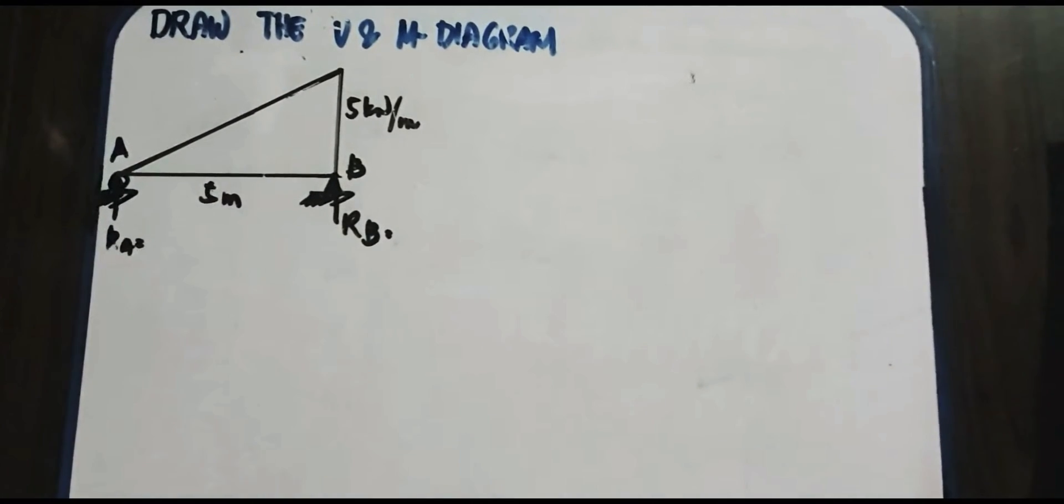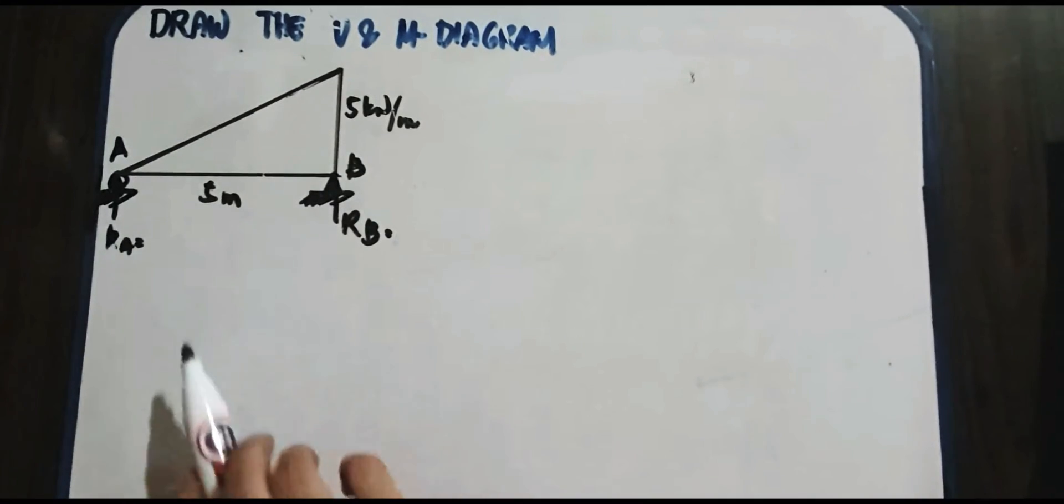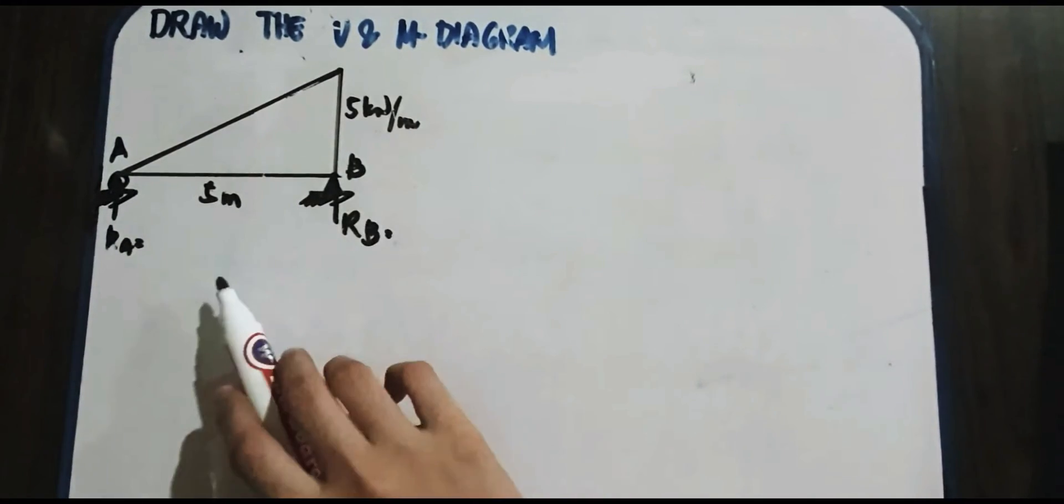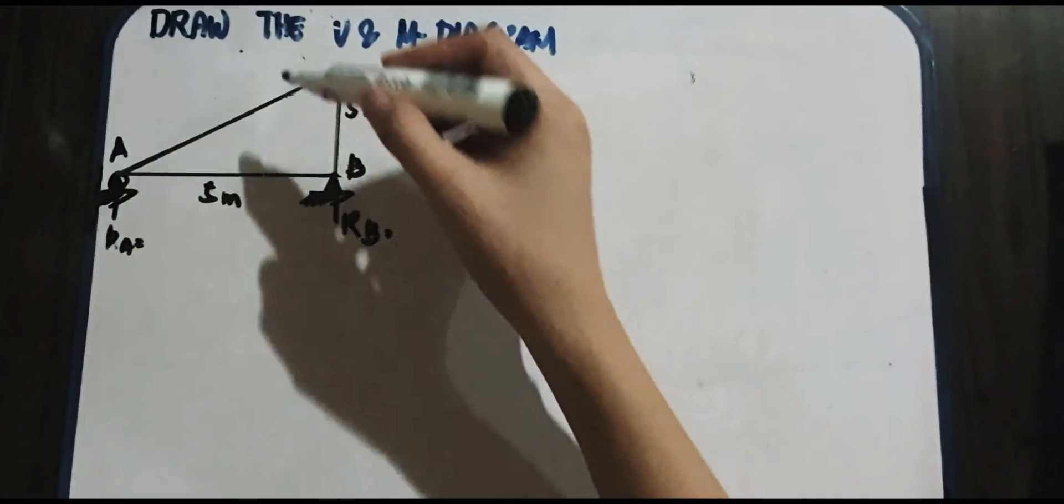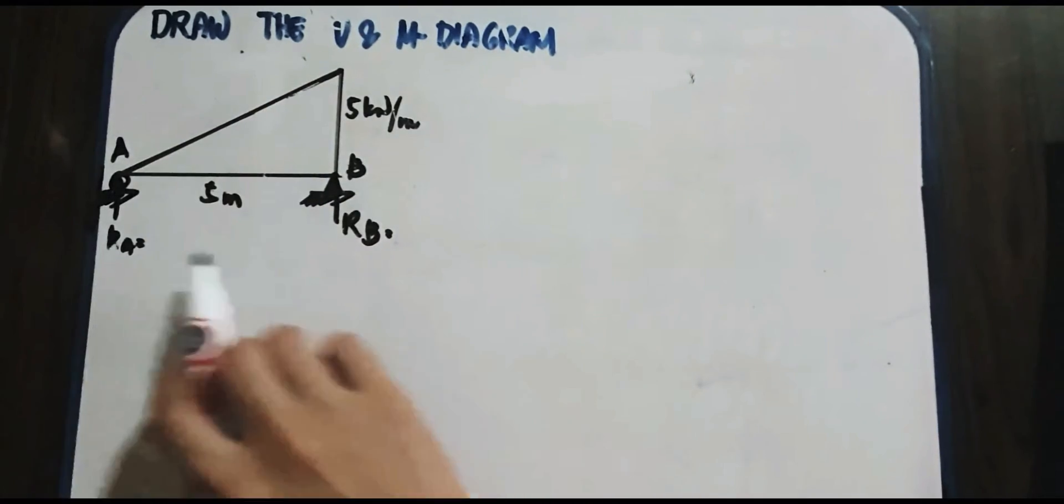Okay, good day. So we have to know that, draw the shear and moment diagram by this triangular load. So we have 5 kN per meter and 5 meter distance. So we have to know this reaction R_A and R_B.